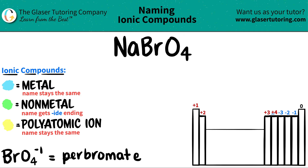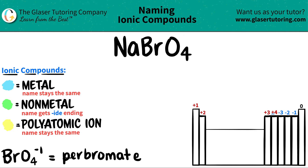Today we are going to be naming the ionic compound NaBrO4. Here's a little trick: if you see that you're dealing with three or more different elements, you know that you're dealing with at least one polyatomic ion. So it's really important to spot out the polyatomic first and then work from there.